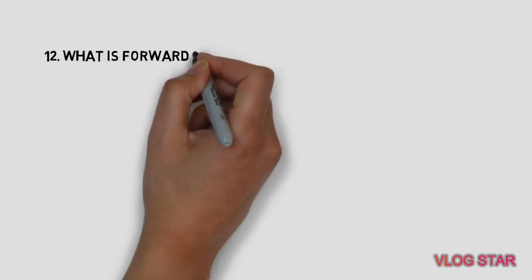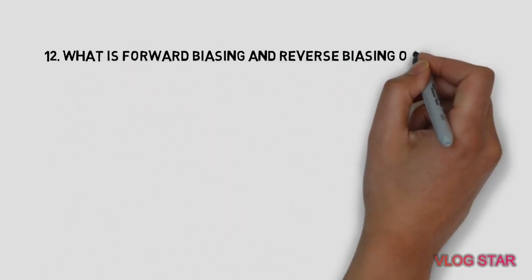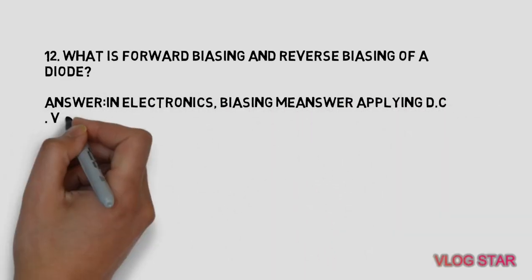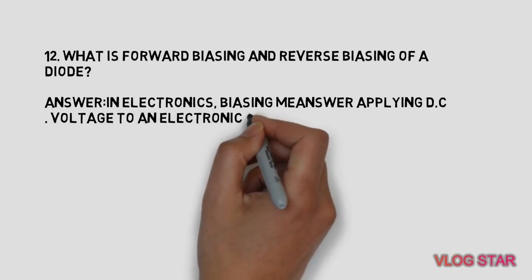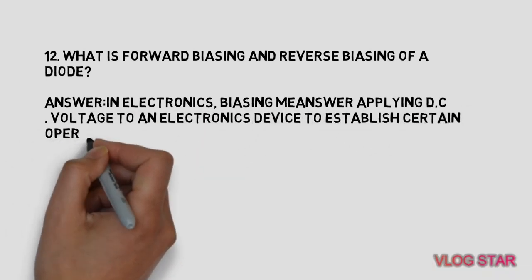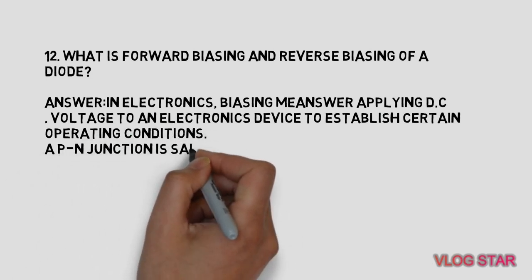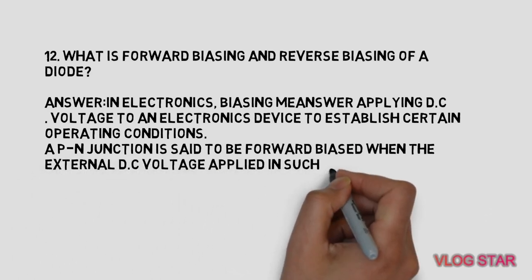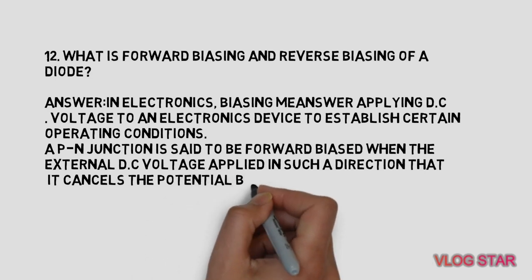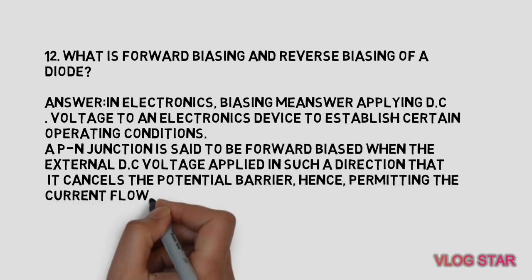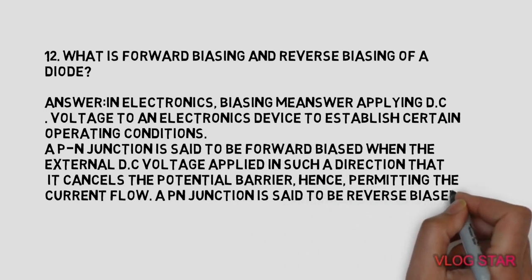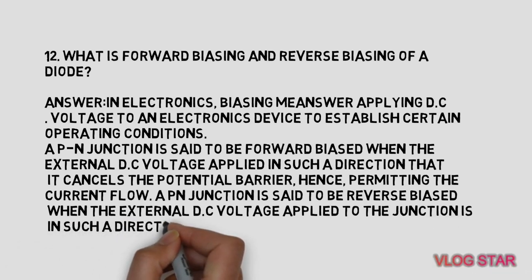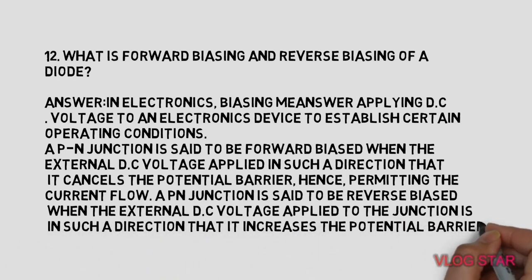What is forward biasing and reverse biasing of a diode? Applying DC voltage to an electronic device establishes certain operating conditions. A PN junction is said to be forward biased when the external DC voltage is applied in such a direction that it cancels the potential barrier, permitting current flow. A PN junction is said to be reverse biased when the external DC voltage increases the potential barrier.